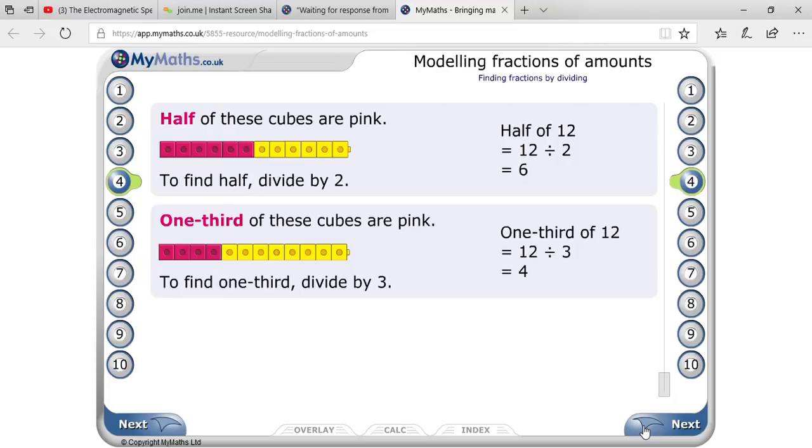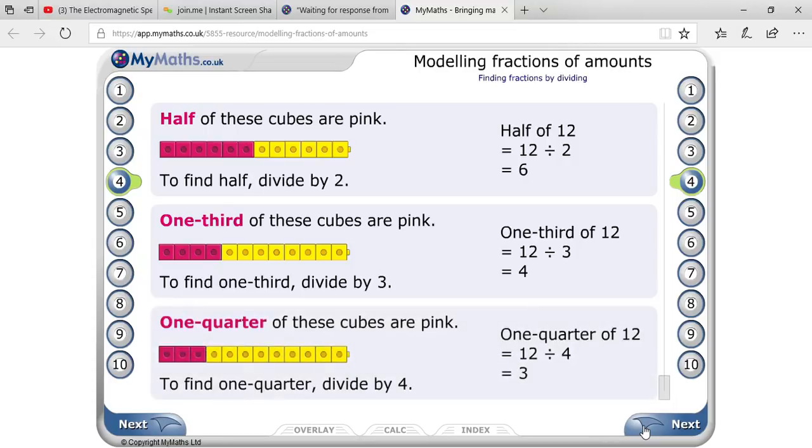One-third means you have to divide by 3. And one-fourth or one-quarter means you have to divide the objects into 4, or divide by 4.